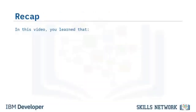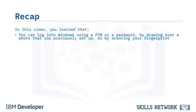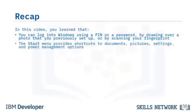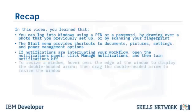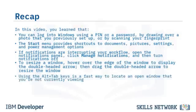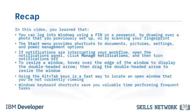In summary, you can log in to Windows using a PIN, password, photo drawing, or fingerprint scan. The Start menu provides shortcuts to documents, pictures, settings, and power management. To manage notifications, open the Notifications panel and click Manage Notifications. To resize a window, hover over the edge and drag. Alt-Tab is a fast way to locate an open window, and keyboard shortcuts save valuable time.